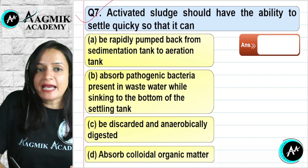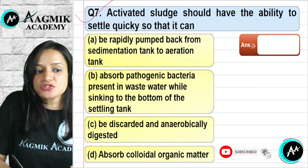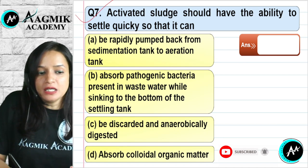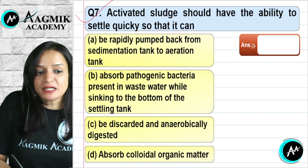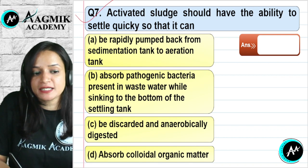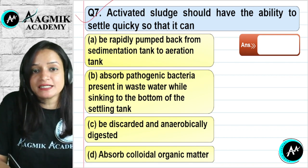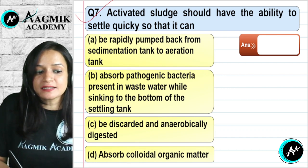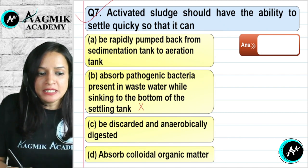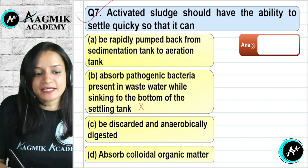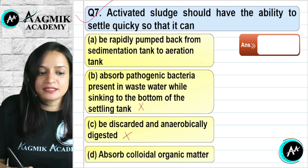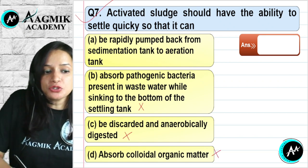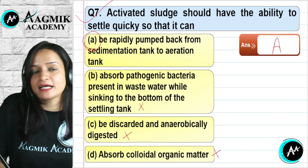Question number 7: Activated sludge should settle quickly so that it can be rapidly pumped back from the sedimentation tank to the aeration tank, increasing the rate of degradation of waste material. It does not absorb pathogenic bacteria, it is not necessarily discarded — it can be reused — and it does not absorb colloidal organic matter in the intended sense. The correct option is A.